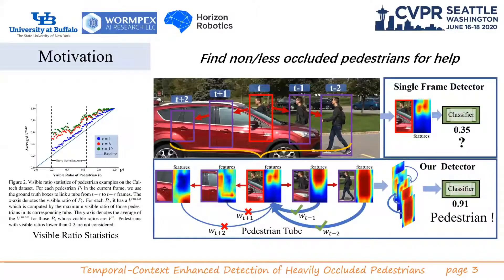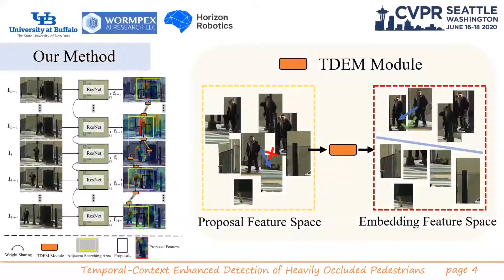In this work, our motivation is to use temporal information to enhance the features of heavily occluded plan screens. Specifically, given a video sequence, we link a proposal tube across frames. To more reliably achieve the tube linking, we use a TGEM module to map the proposal features into an embedding feature space, where potential screens and background samples are more separate.